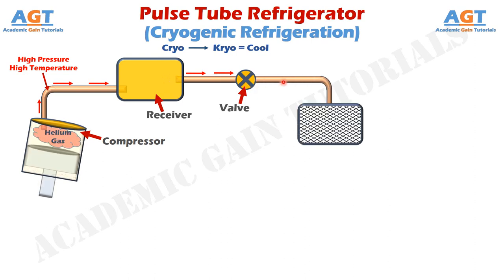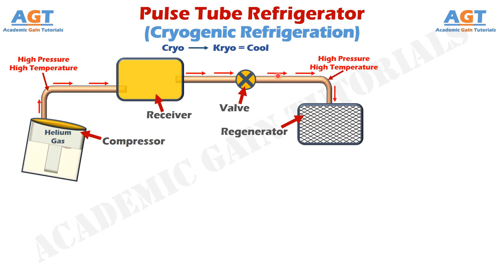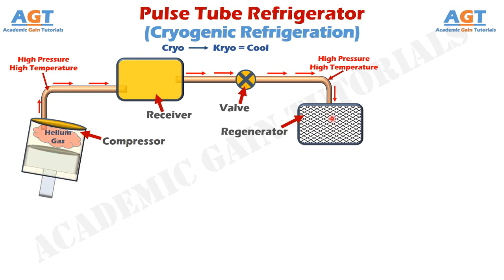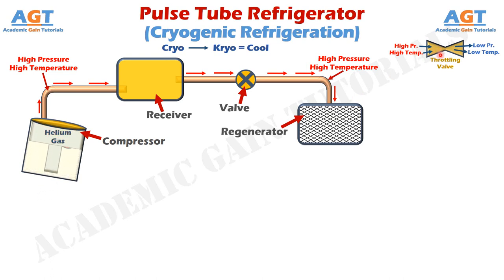After that, the valve is connected to a regenerator through this connecting pipe. The regenerator contains net shaped porous substance inside it. These net shaped porous structures can be built using steel wire or copper wire. Before understanding the function of the regenerator, let's understand the concept based on which it works. We know that whenever we pass a high pressure and high temperature gas through an expansion valve, or through a throttling valve, or through any small opening or small channel, this high pressure high temperature gas expands while coming out from the other side.